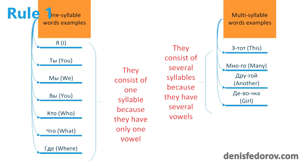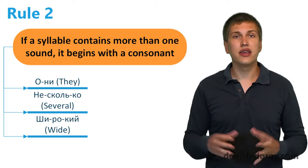Here are some multisyllable words. Этот, много, другой, девочка. These words consist of several syllables because they have several vowels. So let me repeat again. There are as many syllables in a word as vowels.